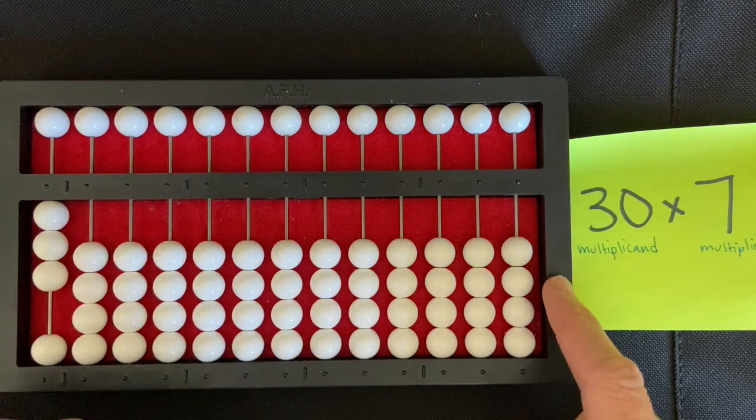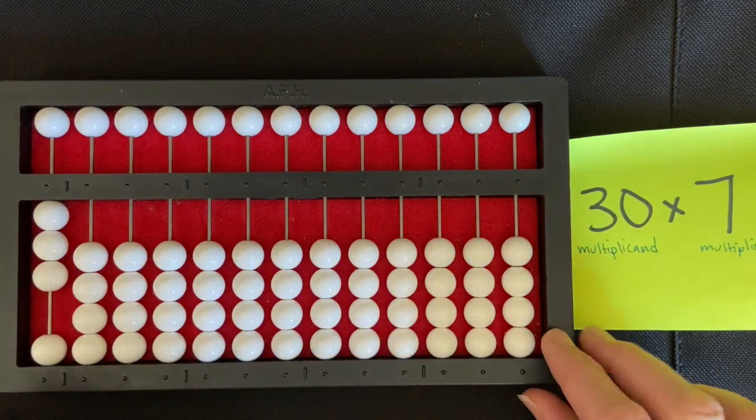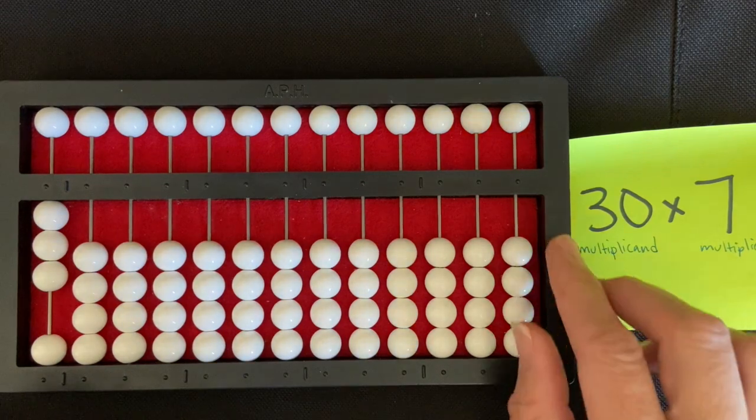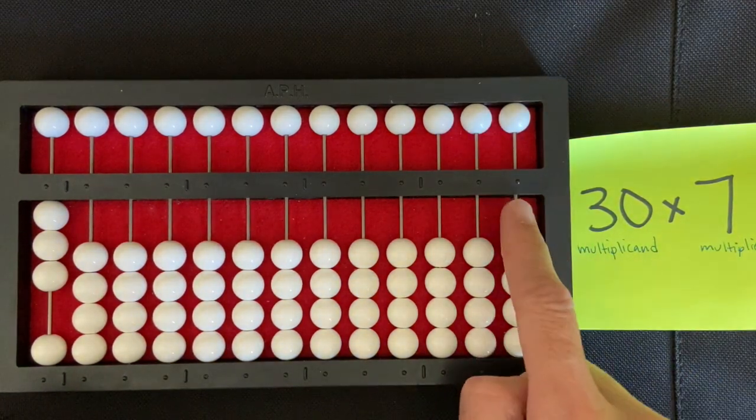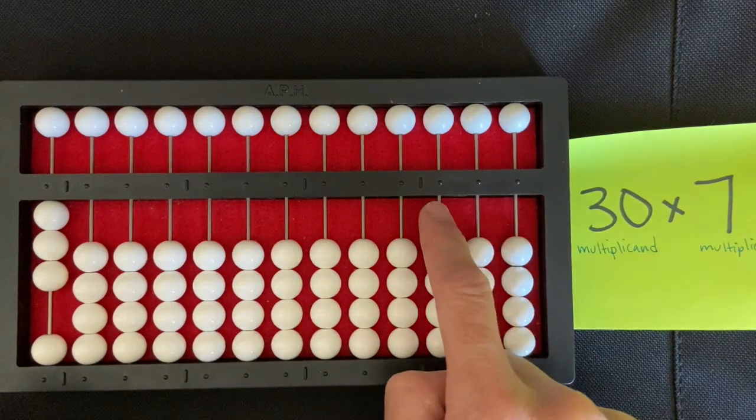I'm going to come over to the extreme right of my abacus and I'm going to set the multiplier by saying the multiplication problem and touching each rod: thirty times seven.